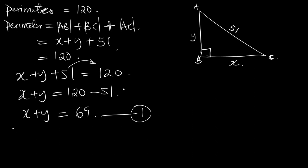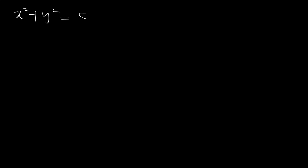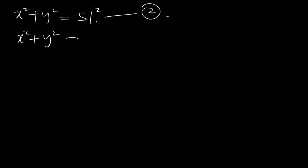Now Equation 2: applying the Pythagorean theorem, we know that the hypotenuse squared equals AB squared plus BC squared. So 51 squared equals x squared plus y squared. That means x squared plus y squared equals 51 squared, which gives us 2601. Let's call this Equation 2.